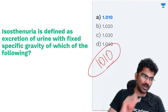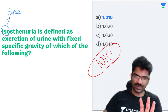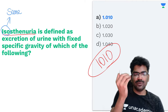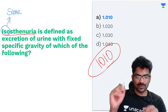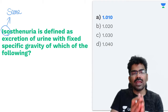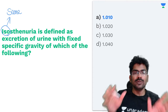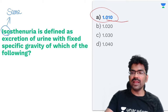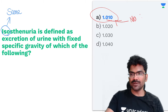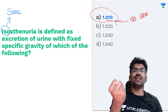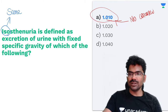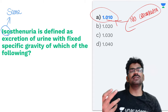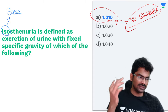Shivangi, the answer is 1.010. Remember, 'iso' means same, so isosthenuria means the specific gravity of urine is fixed — the same. This occurs when the concentration capacity of the kidney is lost. As Neha points out, this is dilute urine with no concentration. Plasma forms an ultrafiltrate, which should normally be concentrated — so 1.010 is the specific gravity of glomerular filtrate.